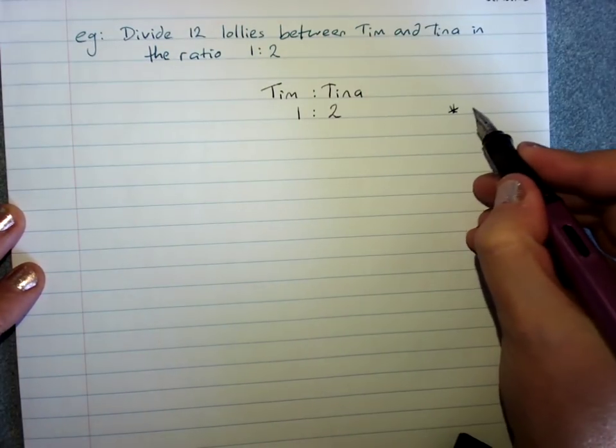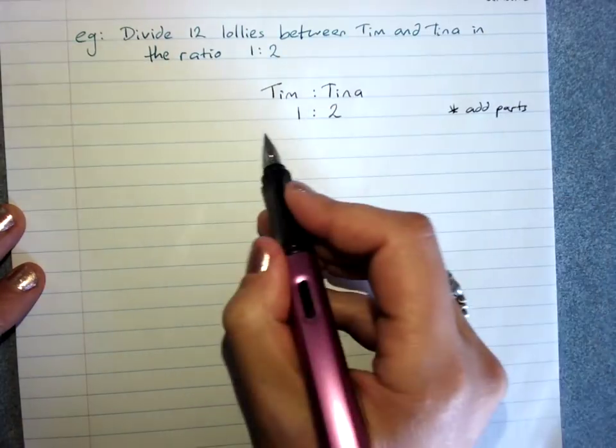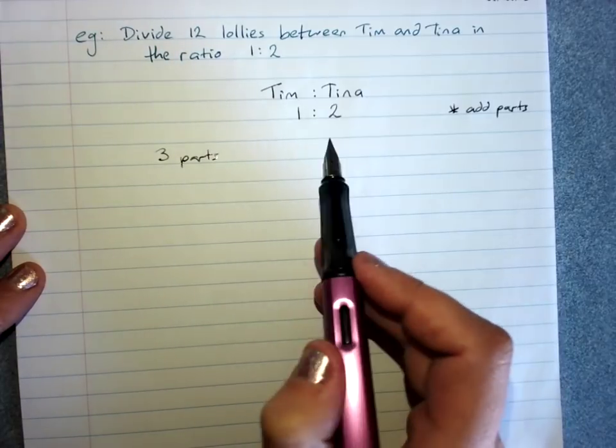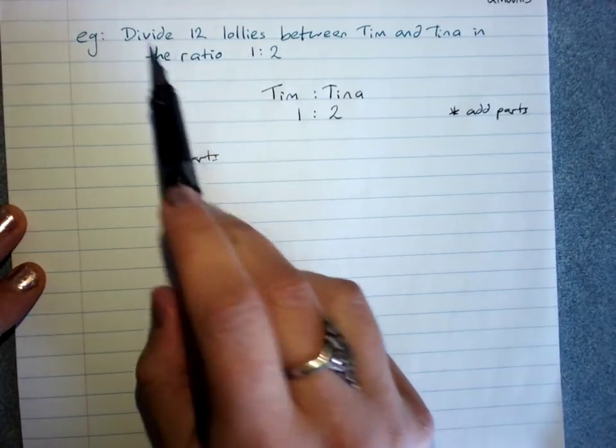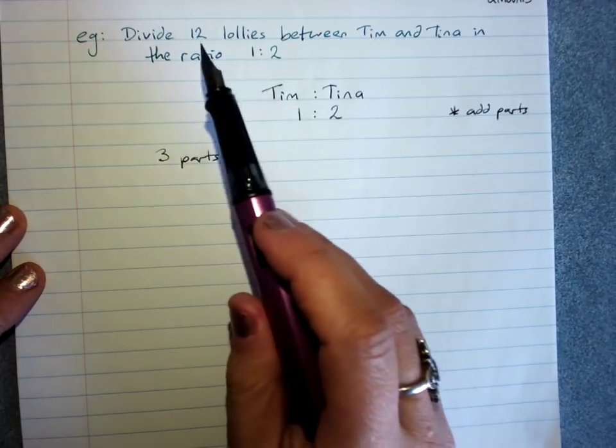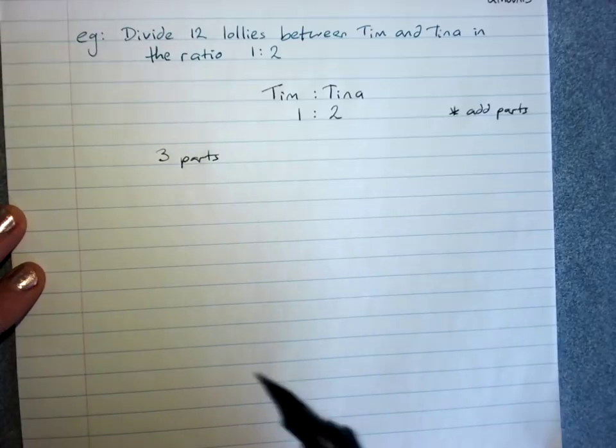Now we still add up the parts - there's three parts. So what that means is out of those twelve lollies, if I split those into three parts, Tim gets one part and Tina gets two parts.